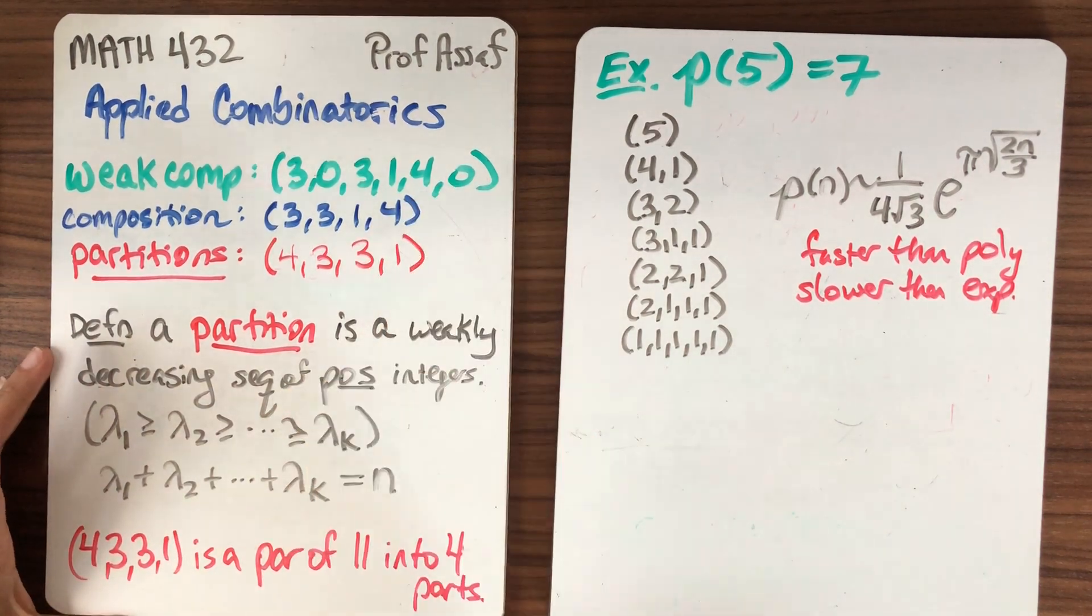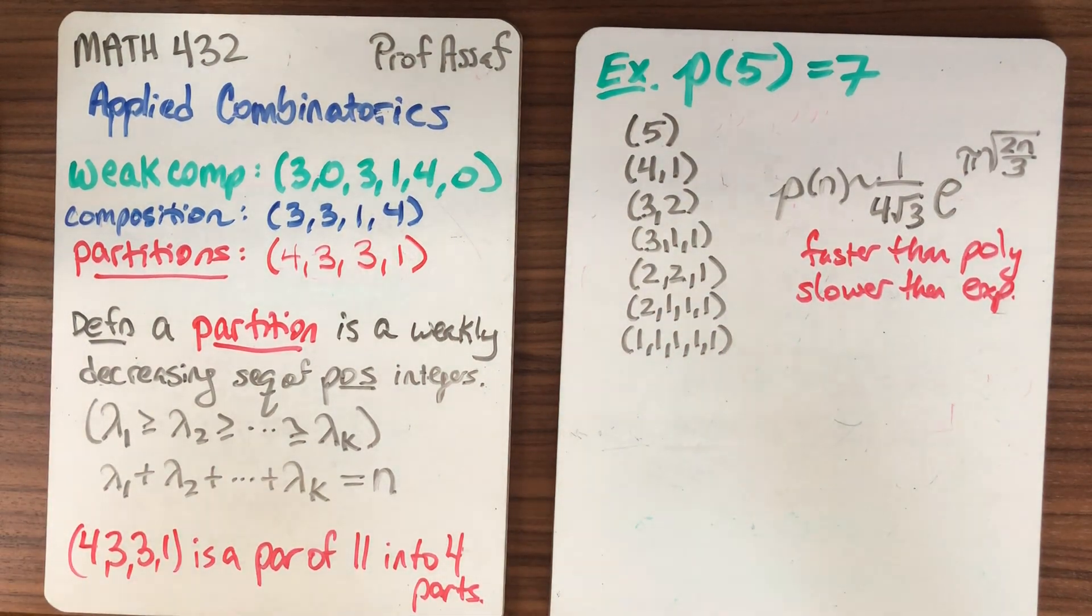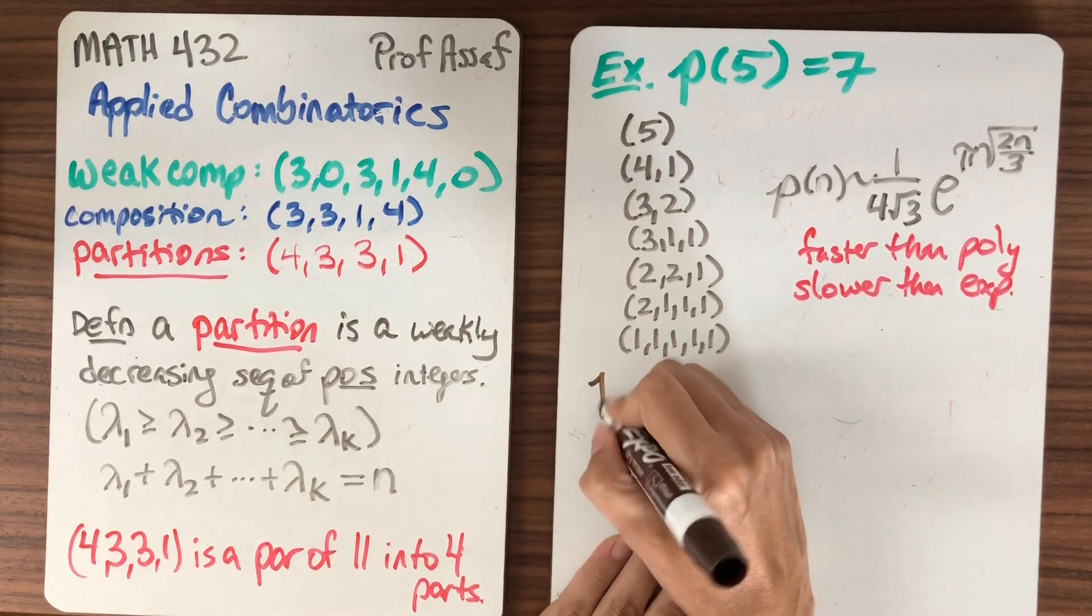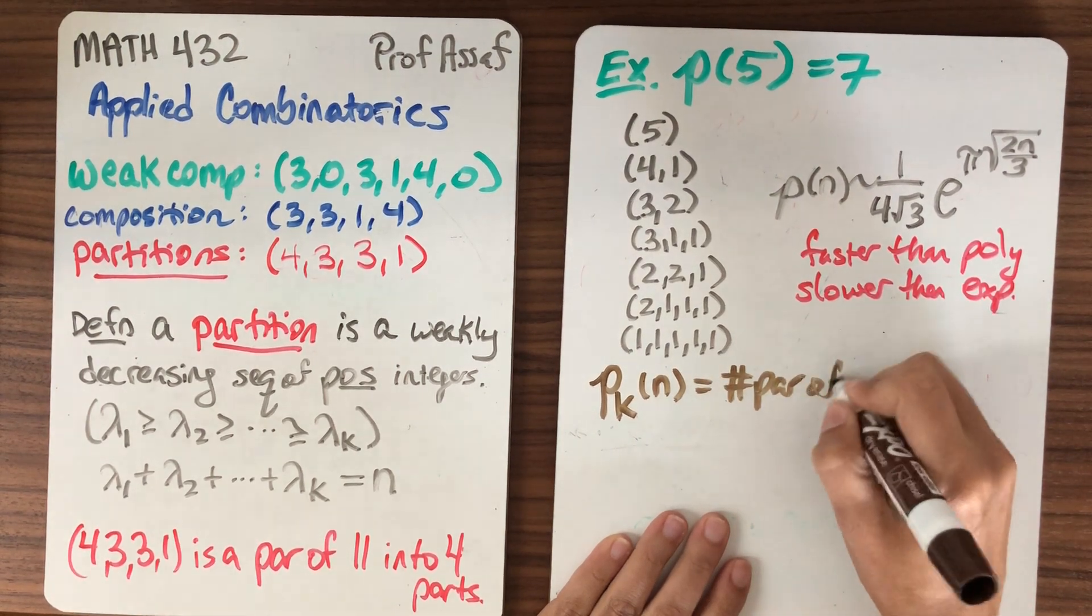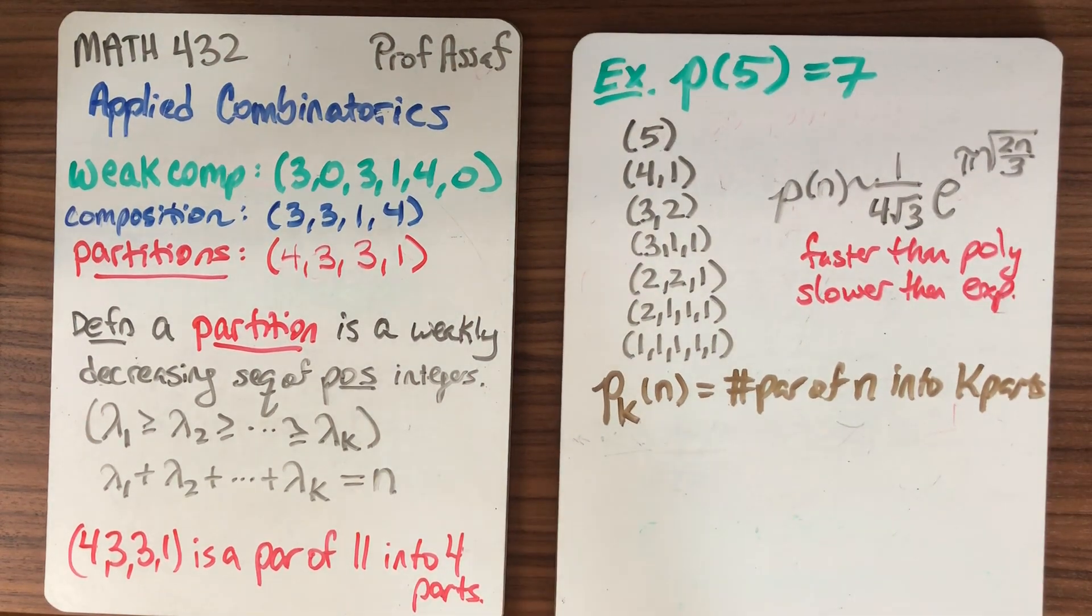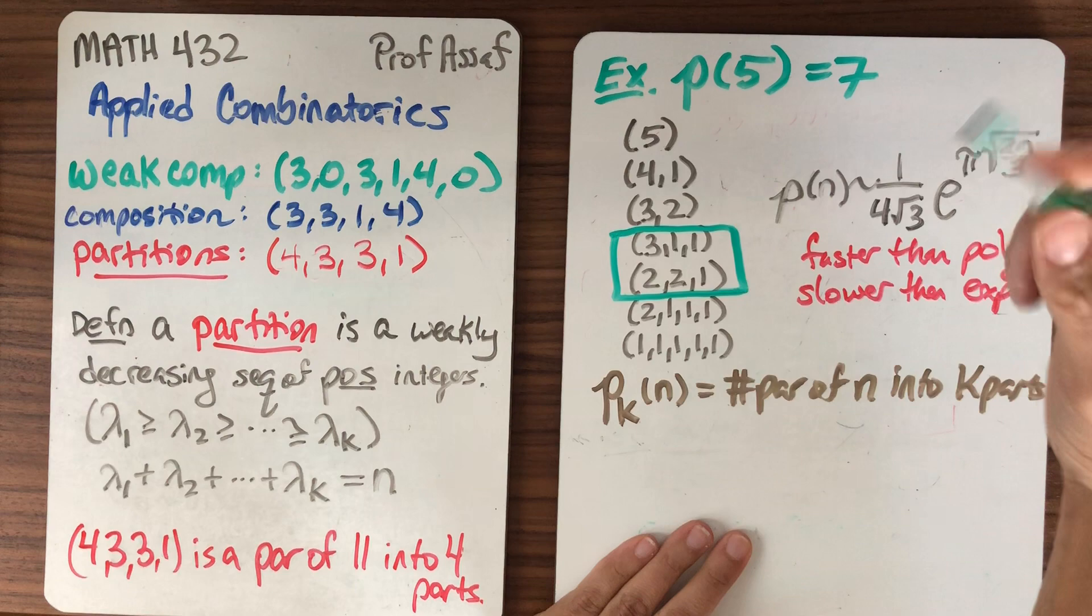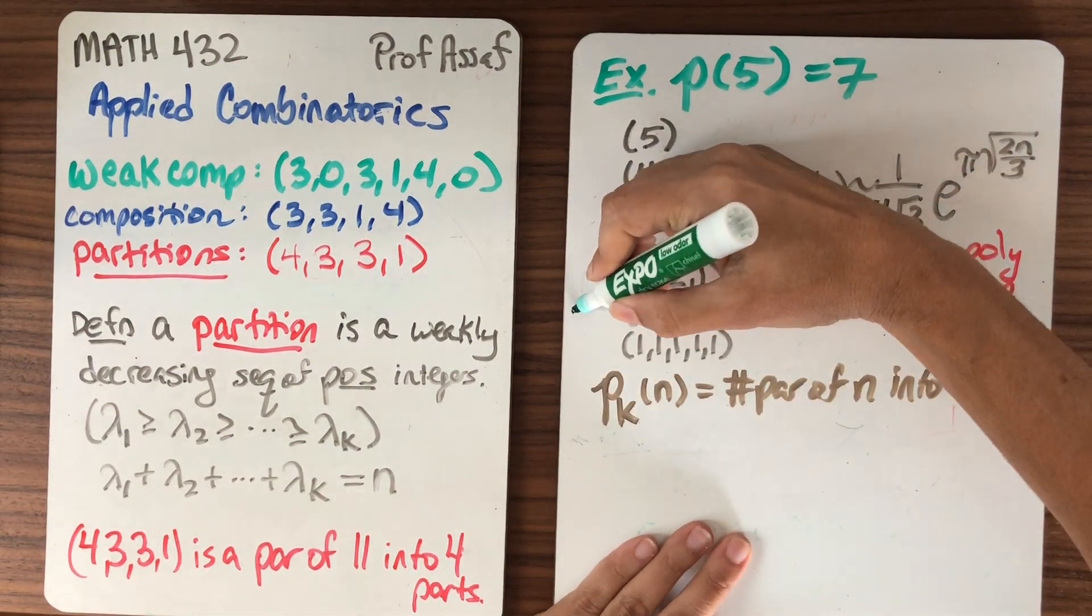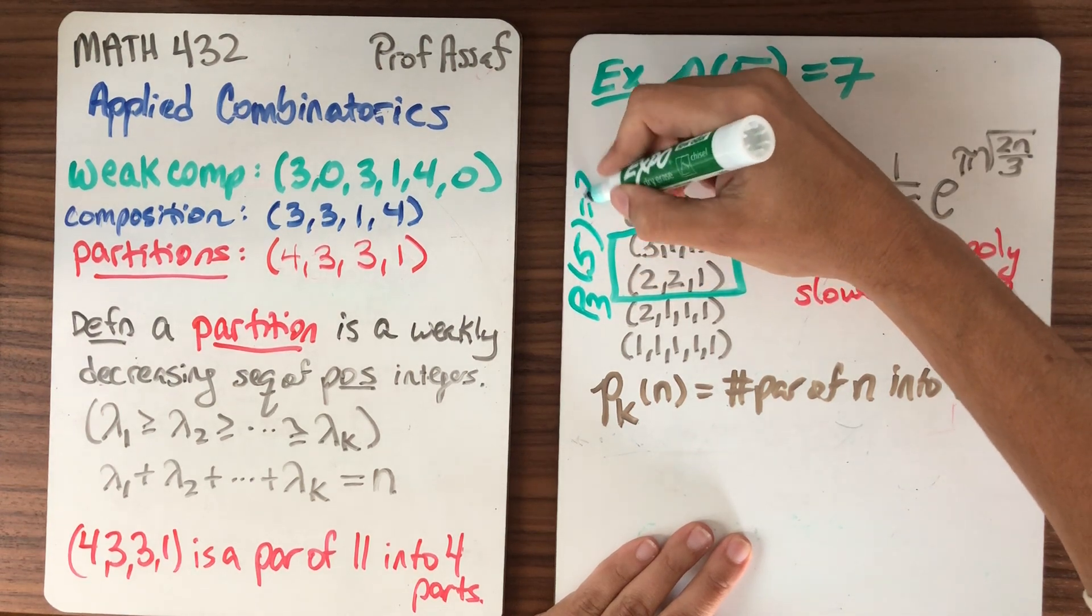But we can still think about different ways to enumerate them. So one thing that helped us with weak compositions and with compositions was thinking not just of partitions of n, but partitions of n into k parts. So let's let p k of n equal the number of partitions of n into k parts. So as an example, we know here that p 3, three parts, total size 5, there are two of them.